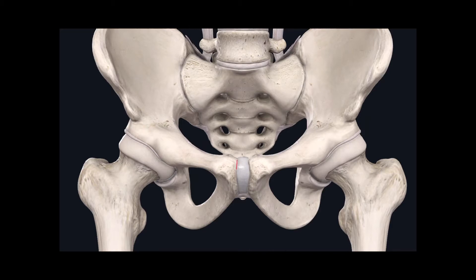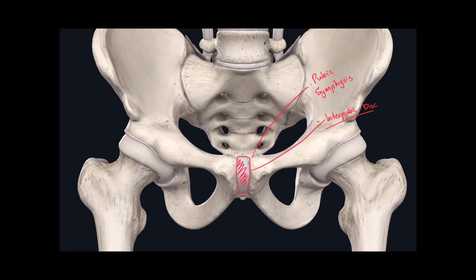The first joint I want to show you is located right here between both pubic bones. This joint is called the pubic symphysis. It is held together by a piece of cartilage, more specifically fibrocartilage, and this piece of fibrocartilage is called the interpubic disc. This joint is classified as a symphysis, which is nice because symphysis is already in the name of the joint.